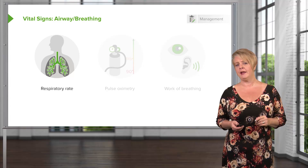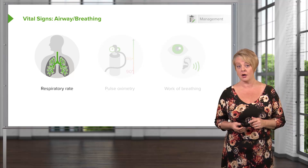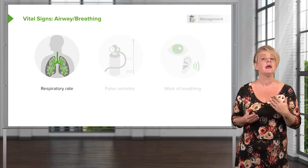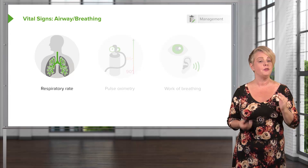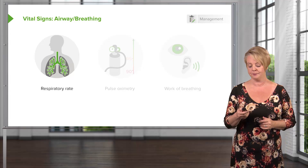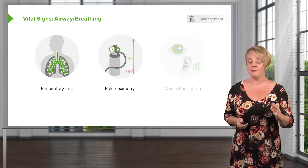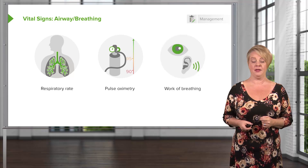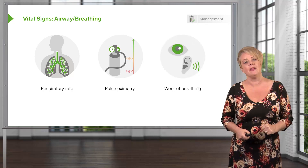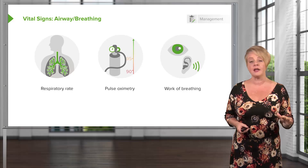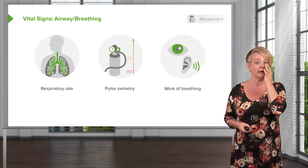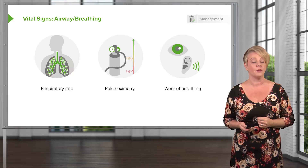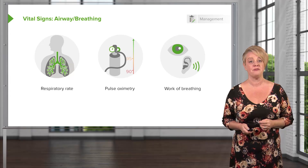Respiratory rate is often not documented correctly in the chart, so this is one you should really check yourself. Bust out your watch, look at the patient, and count their respirations over the course of a minute to get a really good sense of how quickly they're breathing. Pulse ox is absolutely critical — it's the most important vital sign for A and B. And again, work of breathing: if a patient is using a lot of metabolic energy to get air into their lungs, they're not going to be able to sustain that indefinitely, meaning they're at risk for developing respiratory failure.